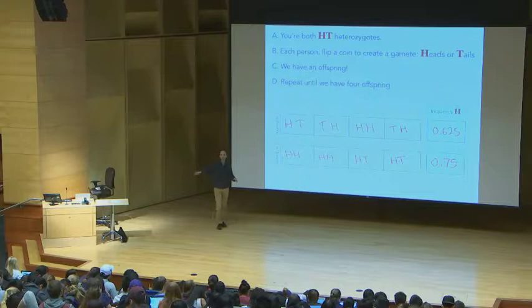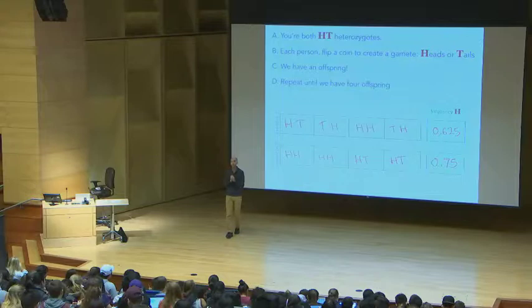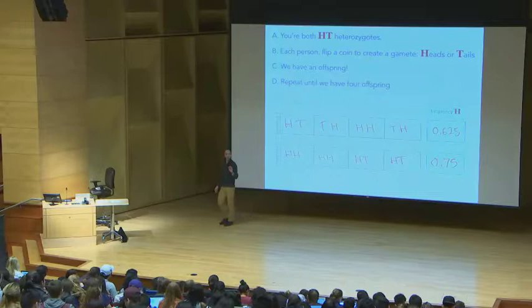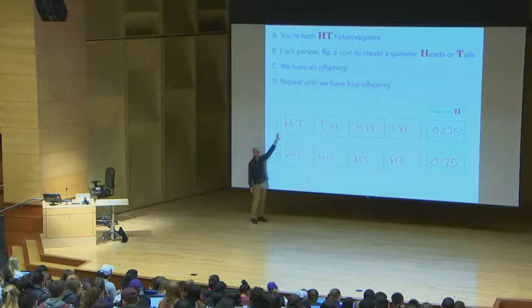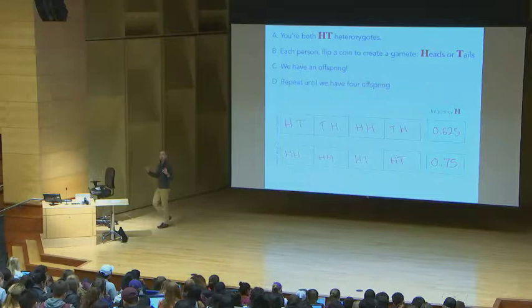We just, any zygote that formed, we said, sure, it works. There was no selection here, and yet, we still had evolution occur. Remember, this is genetic drift. This is when, just because you have a 50% chance of getting heads and tails, doesn't mean you actually get heads and tails 50% of the time. There can be deviations, and those deviations are called genetic drift.